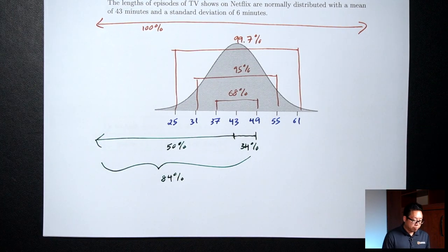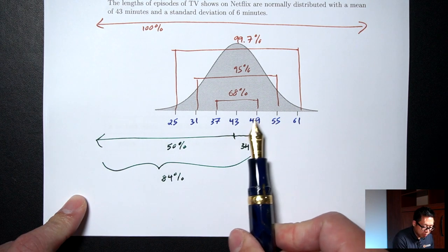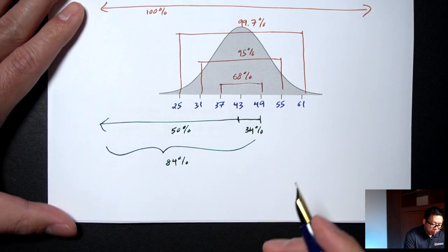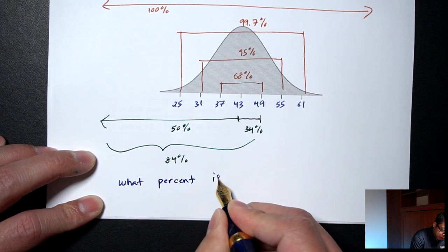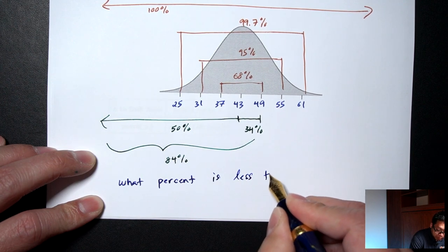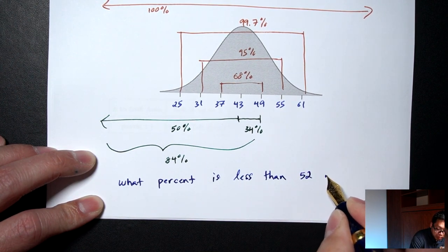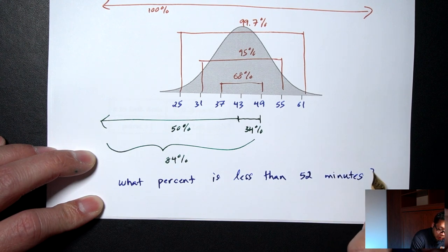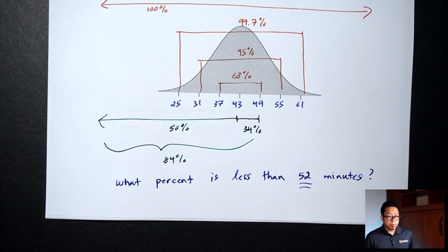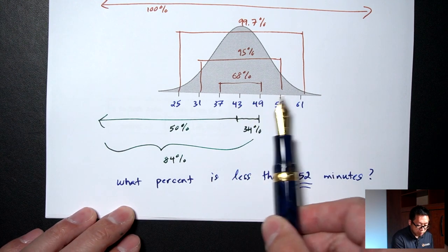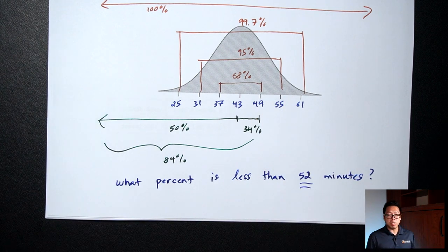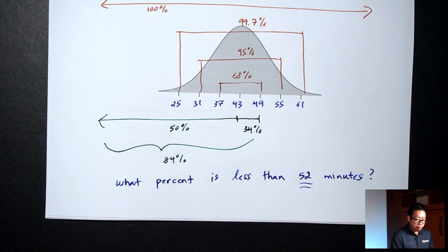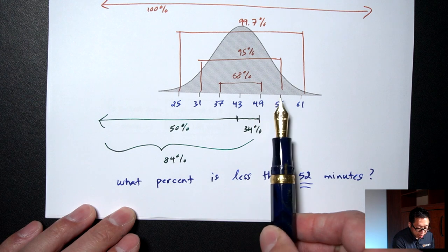The limitation of the empirical rule is we can only answer questions for values that fall exactly on one of these steps. What if I asked: what percent is less than 52 minutes? This is a problem — 52 minutes is not exactly on one of these steps. It's somewhere between 49 and 55. We can't answer this using the empirical rule. Today we'll talk about how we can answer questions when we don't land exactly on one of these steps.